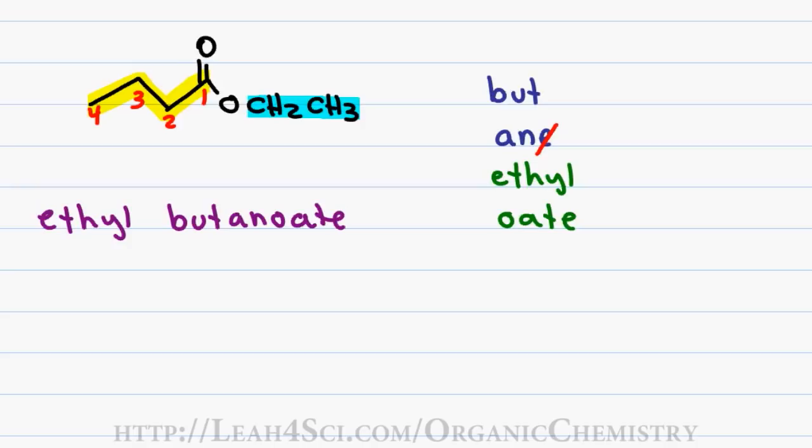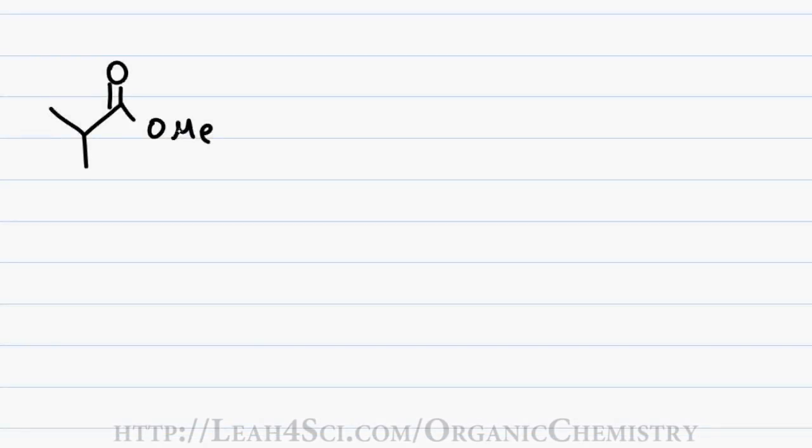Your ester substituents may sometimes be abbreviated. In this case the ME stands for methyl, you may also see ET for ethyl or PR for propyl. To name this molecule, we identify and highlight the parent chain giving the carbonyl the lowest priority.